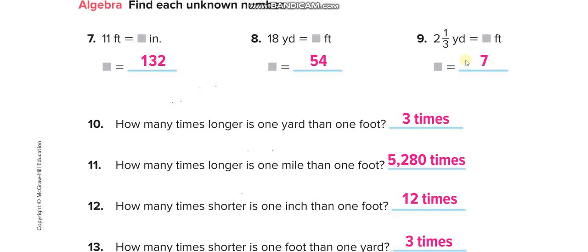Now a fraction question: 2 and one-third yards. One-third yard means if you divide a yard into 3 equal parts you take only 1. Since 1 yard equals 3 feet, one-third of a yard equals 1 foot. So 2 yards equals 6 feet, plus 1 foot from the one-third, giving 7 feet total.